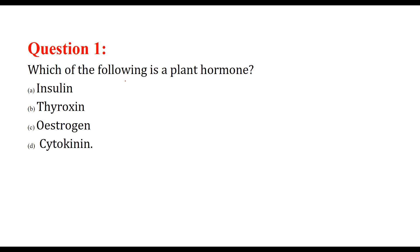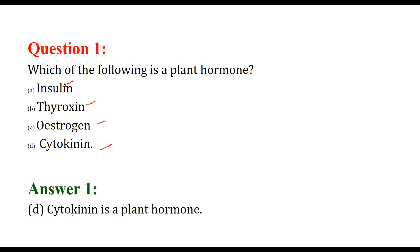Which of the following is a plant hormone? Insulin, thyroxine, and estrogen are all ours — animal hormones. So cytokinin is the plant hormone.